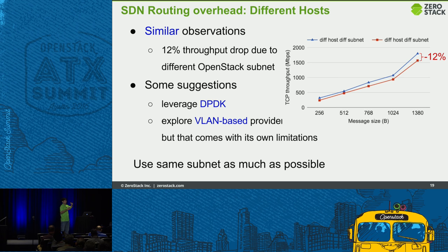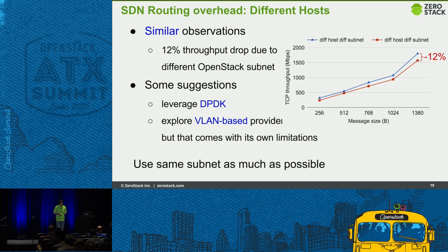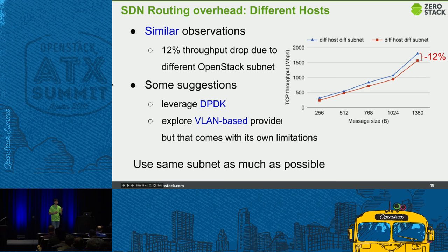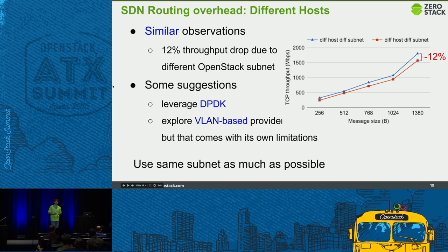In the same experiment but with VMs running across different hosts, the performance degradation is comparable — around 12%. The message is: if your application is happy to coexist in the same OpenStack subnet, don't use different subnets unnecessarily. The hidden cost of putting VMs in different subnets is around 10% performance drop, regardless of whether VMs are on the same host or different hosts. To improve network packet throughput, you can leverage technologies such as DPDK or VLAN-based tenant isolation, though that comes with operational complexity and a 4K tenant limit.